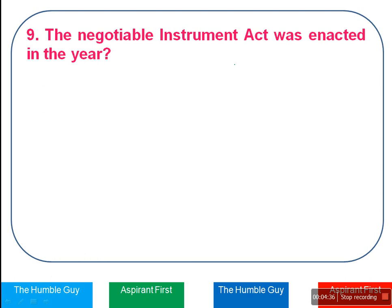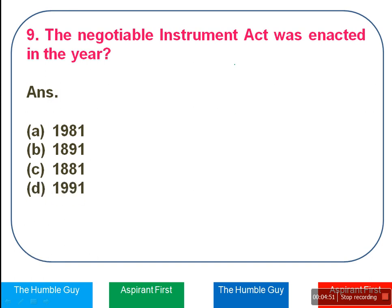The Negotiable Instruments Act — also an important act. The options are 1981, 1891, 1881, or 1991. You must remember this — it is very important for this examination. The right answer is Option C — 1881.